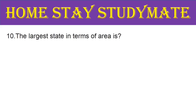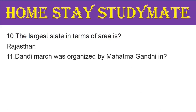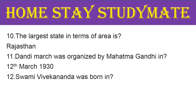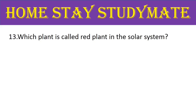Question number 9: which is the heaviest planet in the solar system? The right answer is Jupiter. Next, question number 10: the largest state in terms of area is? The right answer is Rajasthan. Next, question number 11: Dandi March was organized by Mahatma Gandhi in? The right answer is 12th March 1930. Next, question number 12: Swami Vivekananda was born on 12th January 1863.